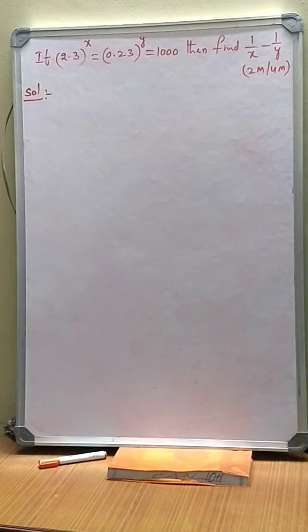Let's take one more question from real numbers. If 2.3 to the power of x equals 0.23 to the power of y equals 1000, then find 1 by x minus 1 by y.